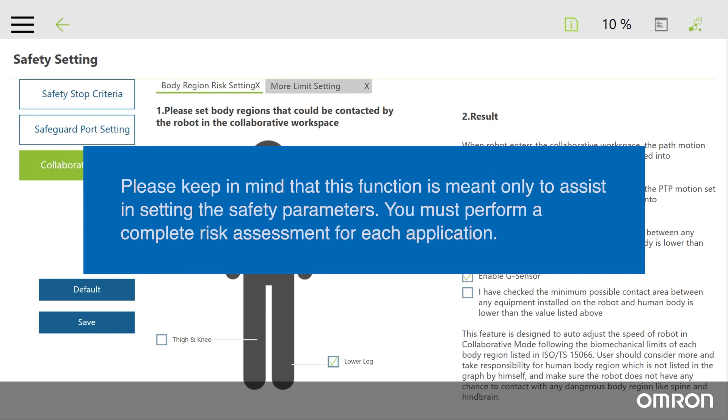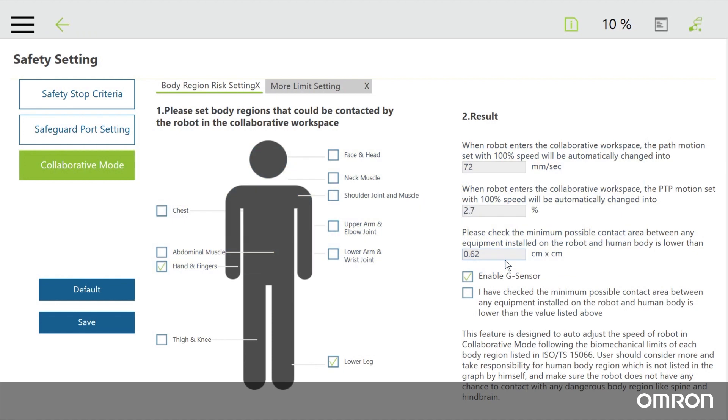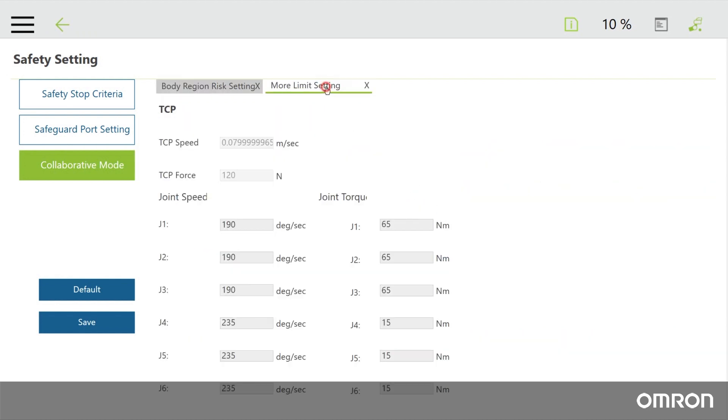However, please keep in mind that this function is meant only to assist in setting the safety parameters. You must perform a complete risk assessment for each application. You can also click on more limit setting to adjust individual joint speed and torque values, but you are limited to using values less than those based on the standards.